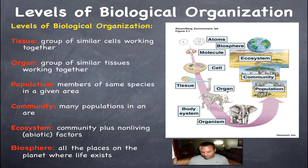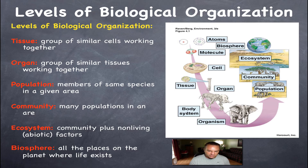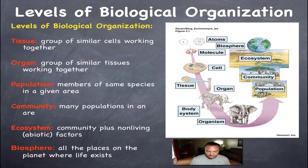When you put a bunch of organs together, you've got an organ system. In this example, you've got the skeletal system shown in this skeleton of the elephant. A bunch of body systems together — for example, the digestive system, muscular system, and cardiovascular system — will create an organism, in this case an adult elephant.